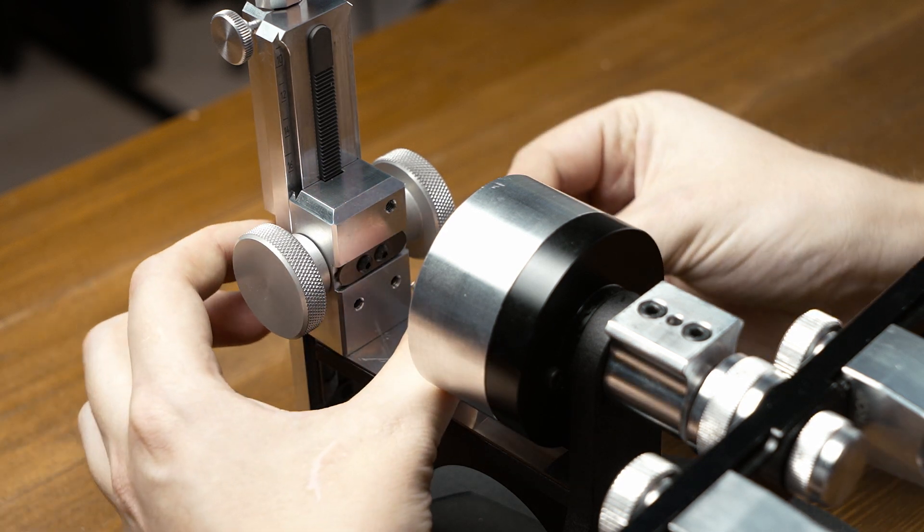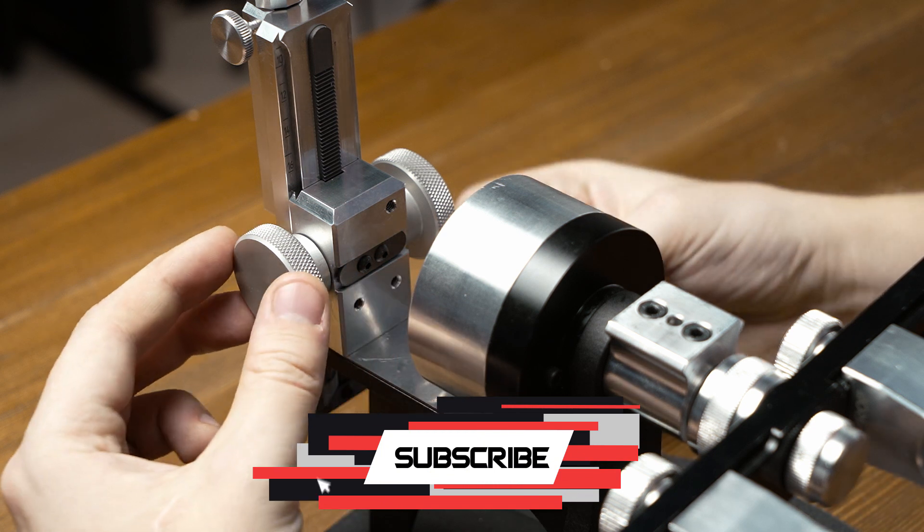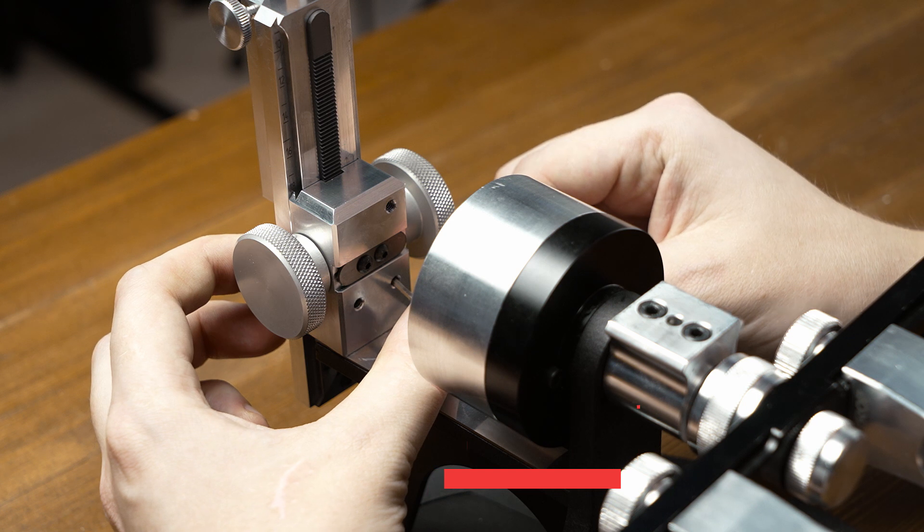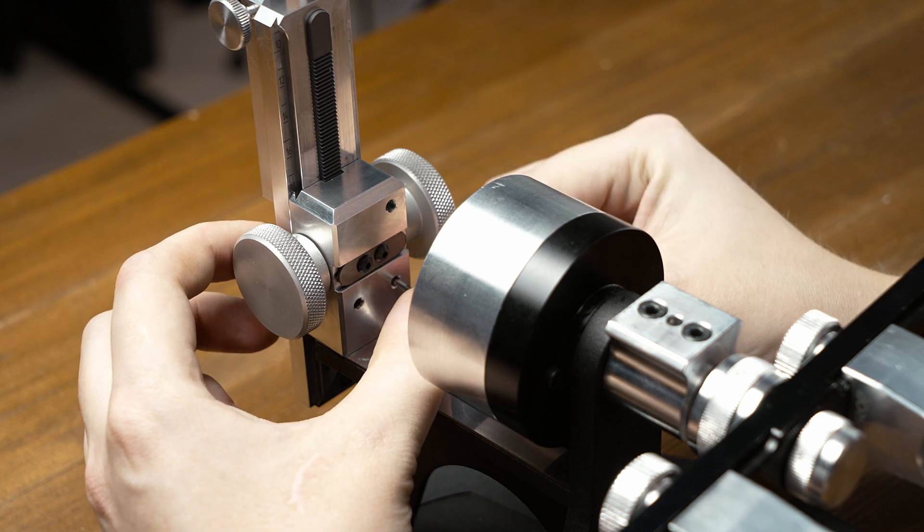Then we need to adjust the lower clamping screws which configure the smoothness of the move. Slightly loosen them.